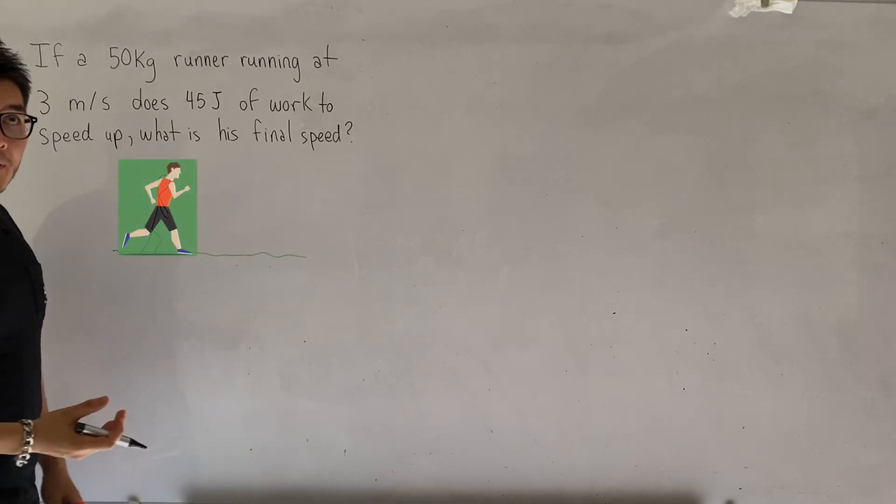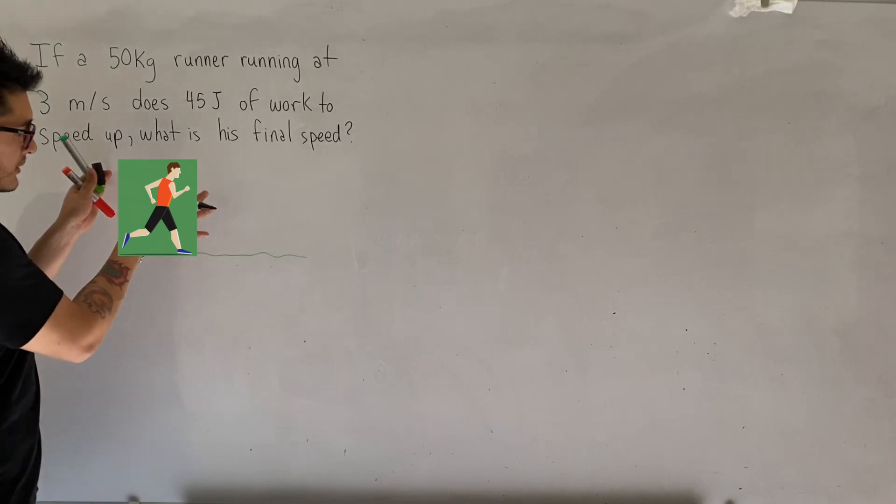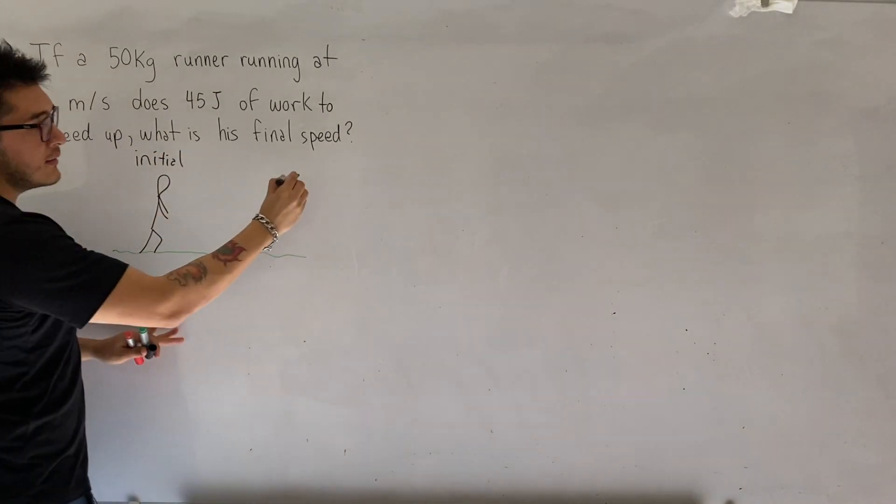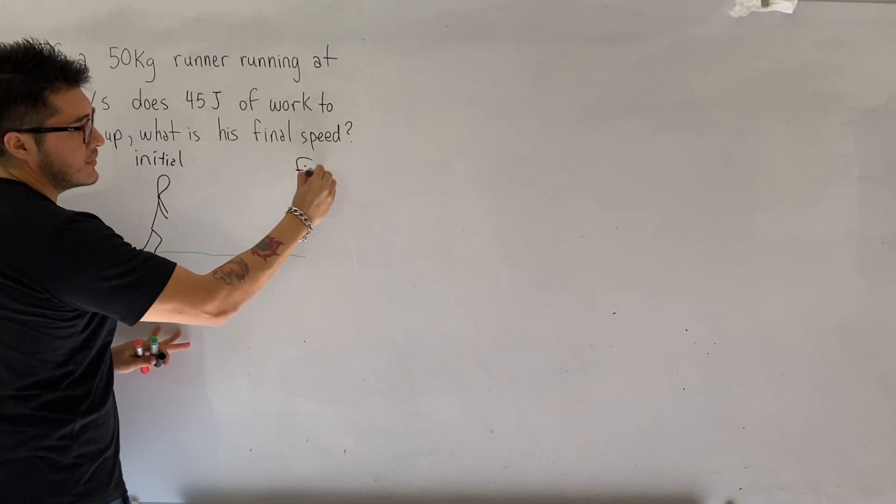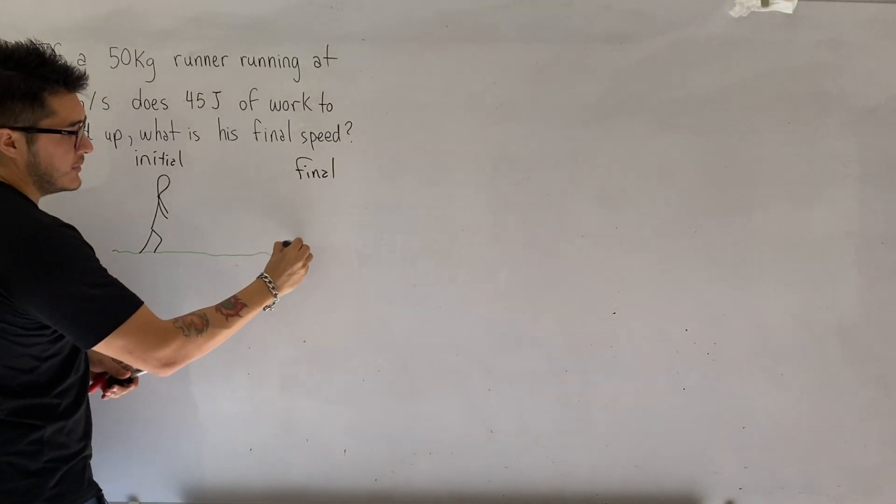But as I mentioned before, one good strategy for the energy unit is you want to identify the initial conditions. So you want to put in initial and the final conditions, which occur at a later time. So we draw the runner again.